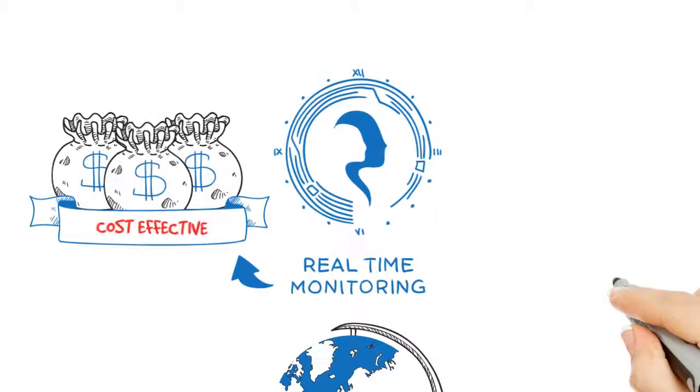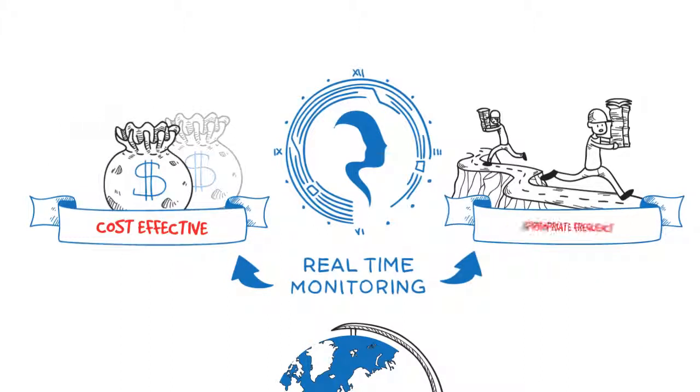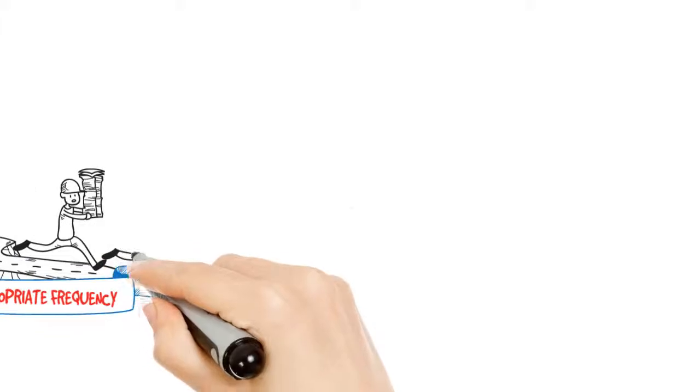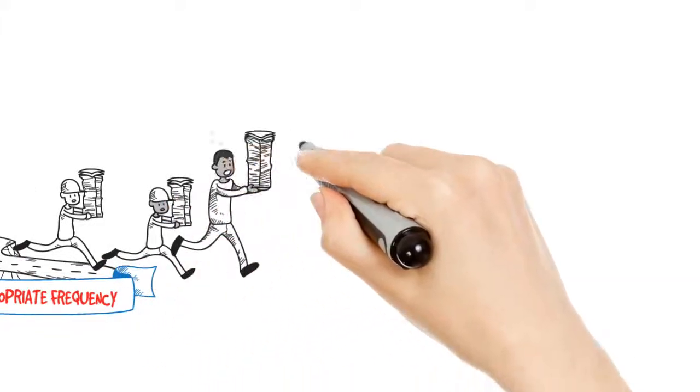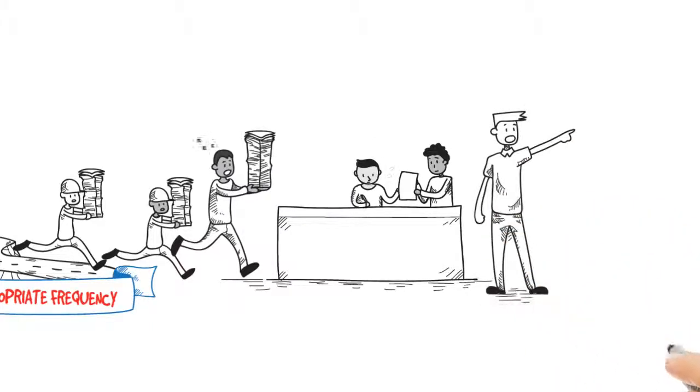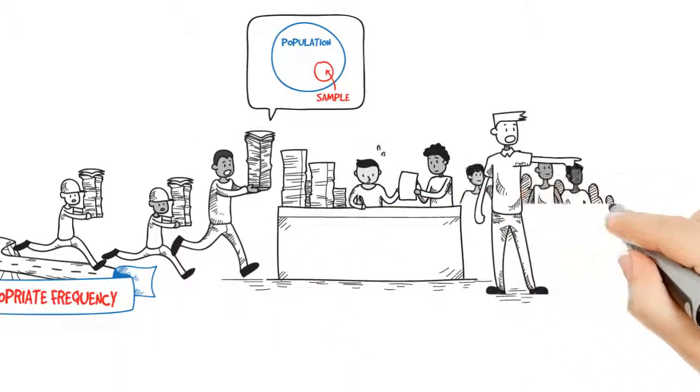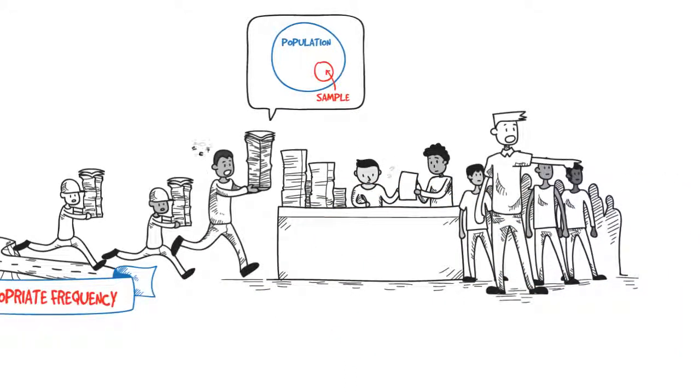We've found that it can be cost-effective, that the frequency of data collection needs to be appropriate to the context and adjusted as needed. RTM is not just about collecting data. Analyzing, communicating, and acting on the information is equally important. Randomized sampling and combining qualitative and quantitative information makes RTM more efficient and actionable.